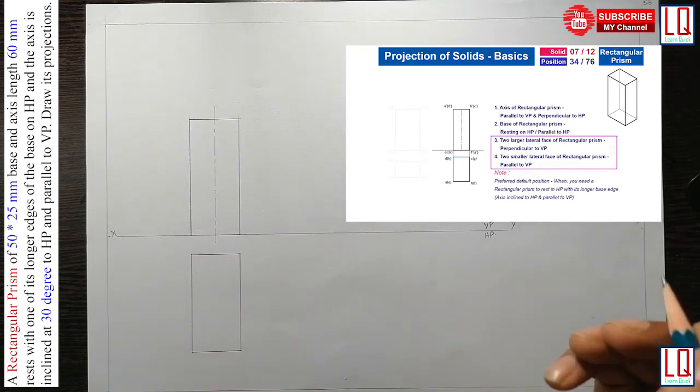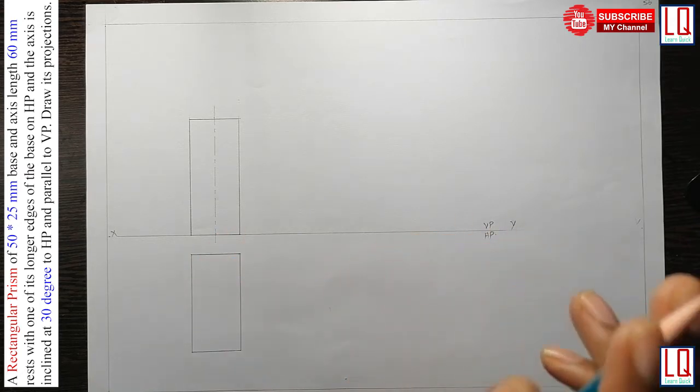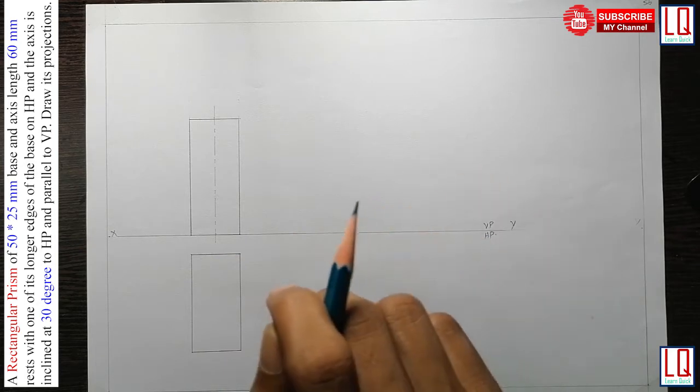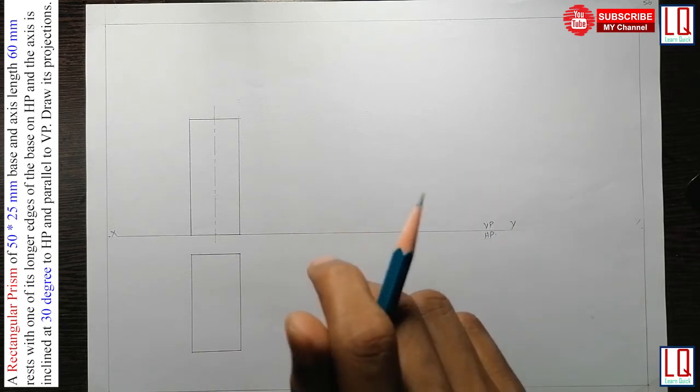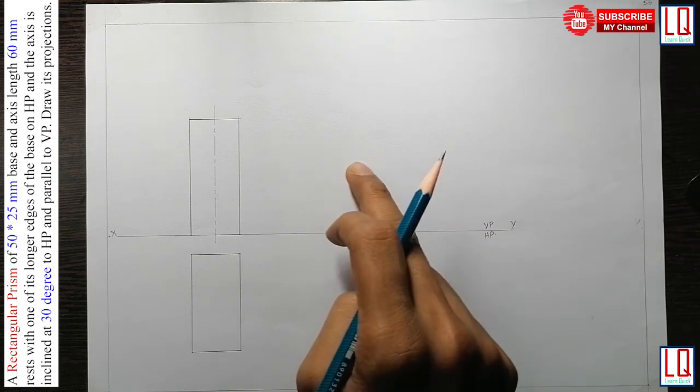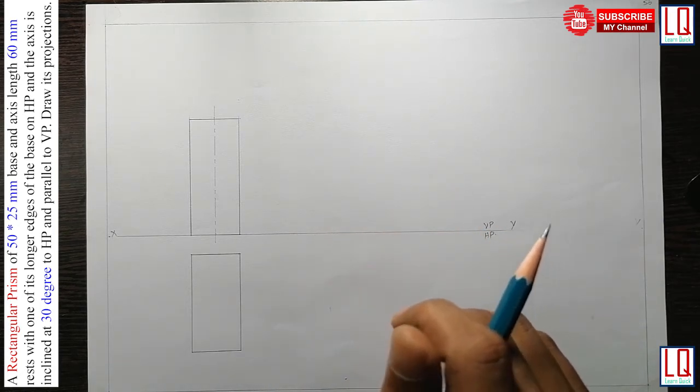So the third part is given in the question. The axis of this rectangular prism is inclined at 30 degree to HP and parallel to VP. Then, after inclination, we have to draw its projection. We have to draw the front view and top view of this rectangular prism.